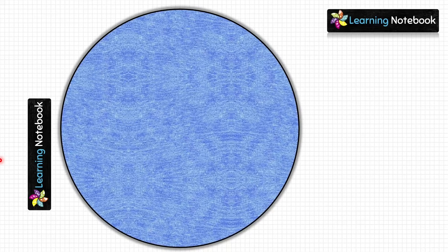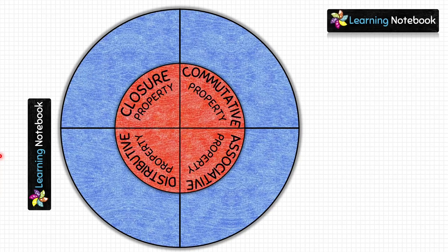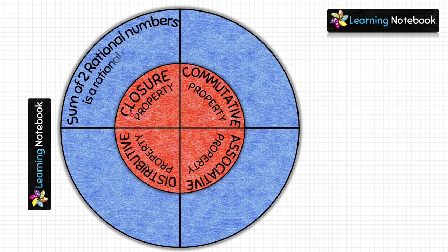Now take the blue circle, fold it vertically as well as horizontally, then place the red circle on top of the blue circle so that their centers match. For closure property, write the definition: the sum of two rational numbers is also a rational number, that is a + b = c, where a and b are rational numbers and their sum c is also a rational number.